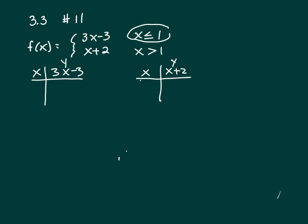This tells you what x values you choose. So we want to choose the values that are less than or equal to 1. So let's do 1, 0, negative 1. And plug that in 3x minus 3. So 3 minus 3 is 0. Now plug in a 0 and you get negative 3. And now plug in a negative 1 and you get negative 3 minus 3, which is negative 6.